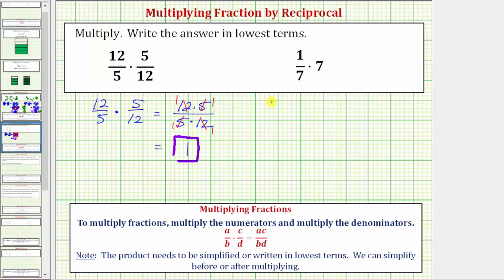Next we have 1 seventh times 7, which we can write as an improper fraction as 7 over 1. So now we multiply, 1 times 7 is 7, 7 times 1 is 7, and of course 7 sevenths is equal to 1.